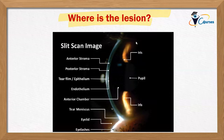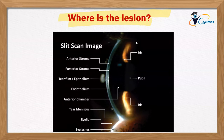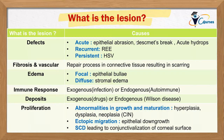Once you detect a lesion and know its anatomical level — whether sub-epithelial, anterior stromal, or epithelial — the next step is to know what the lesion is, i.e., the pathology. If you think about pathologies affecting the cornea, they fall into one of six categories.